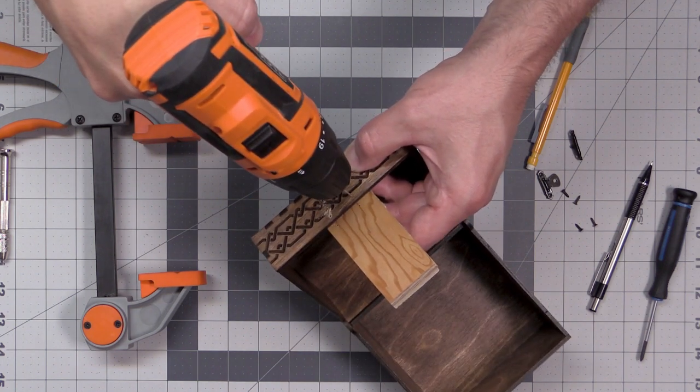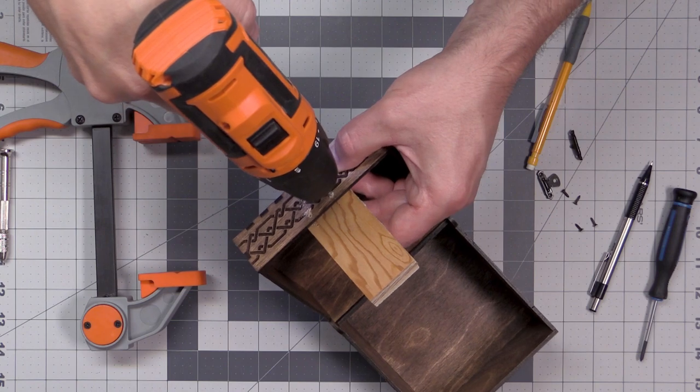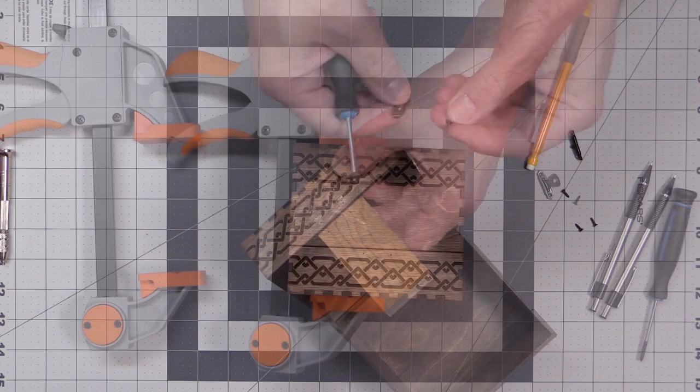I've placed the piece of scrap wood there to make sure there's no tear out on the back side from the drill. Next, I'm going to reclamp the box together and install the top section of the hasp.